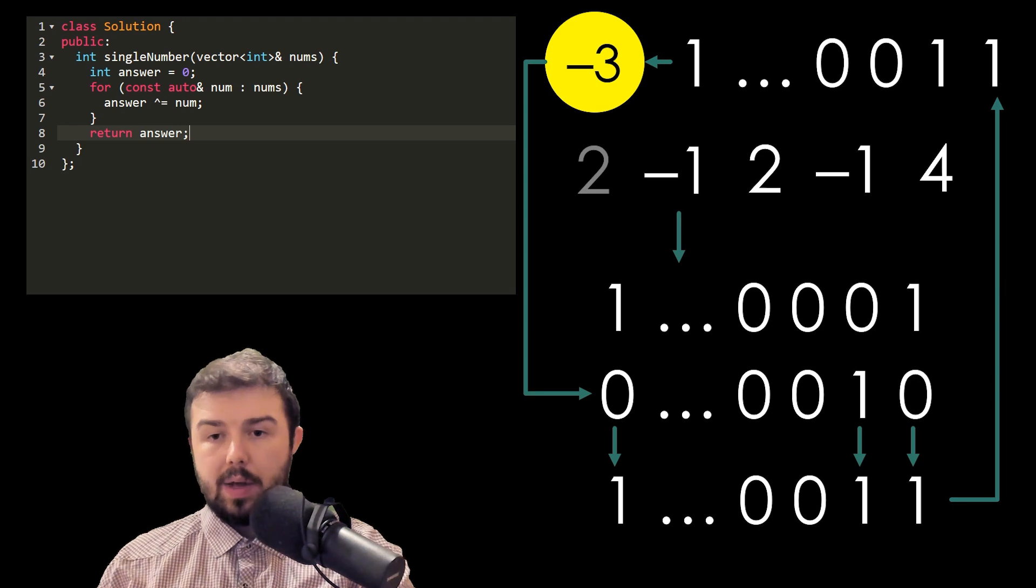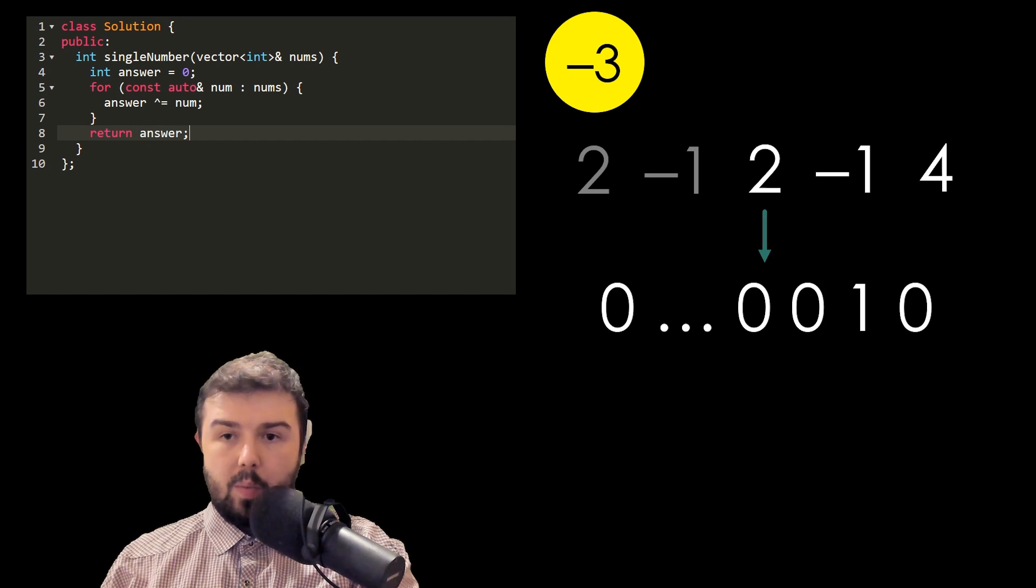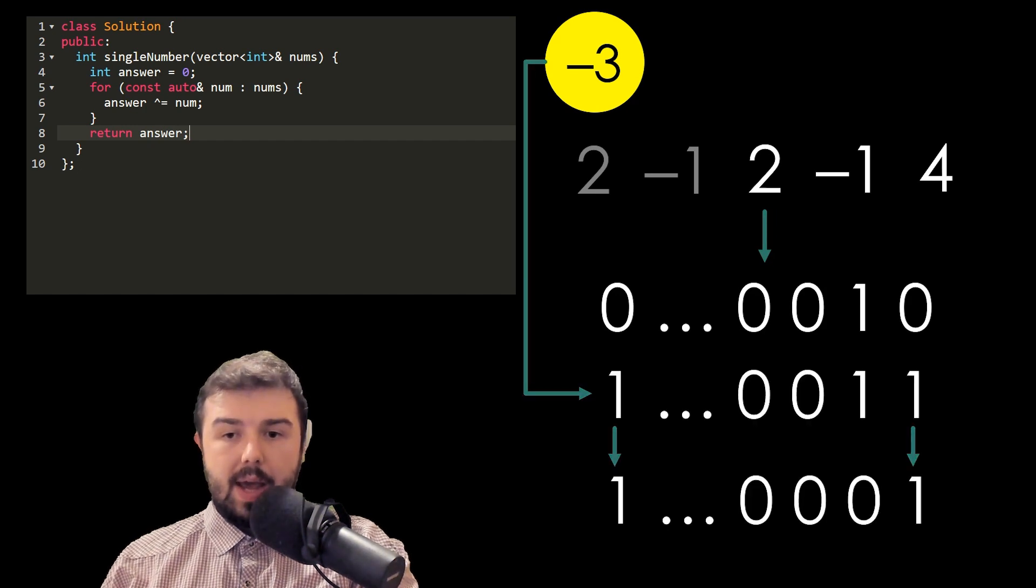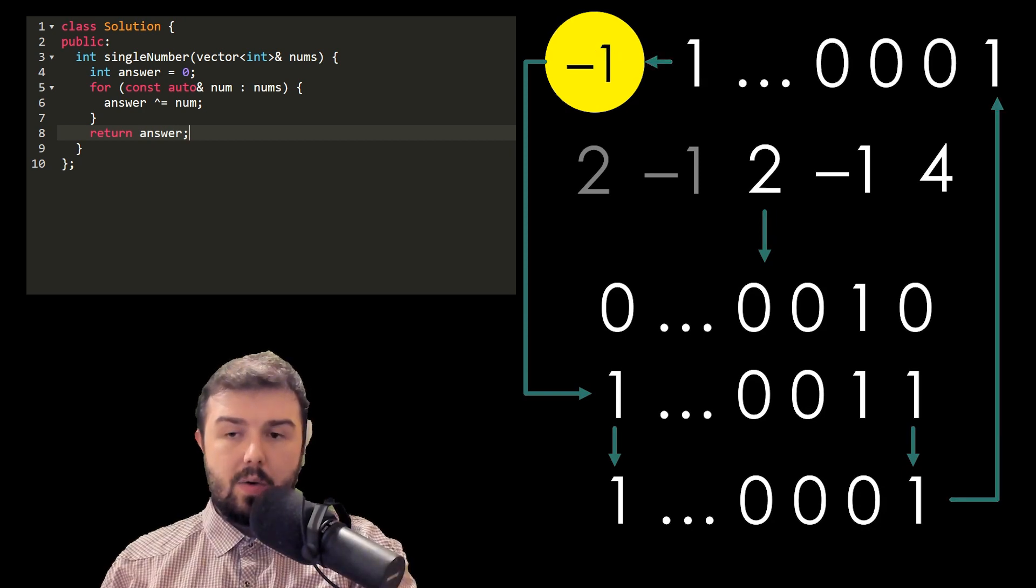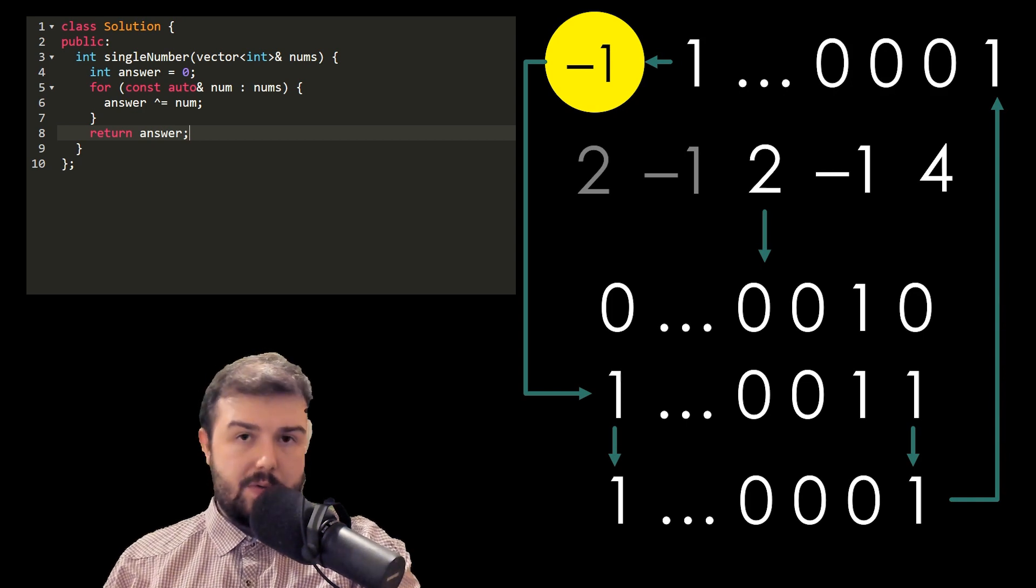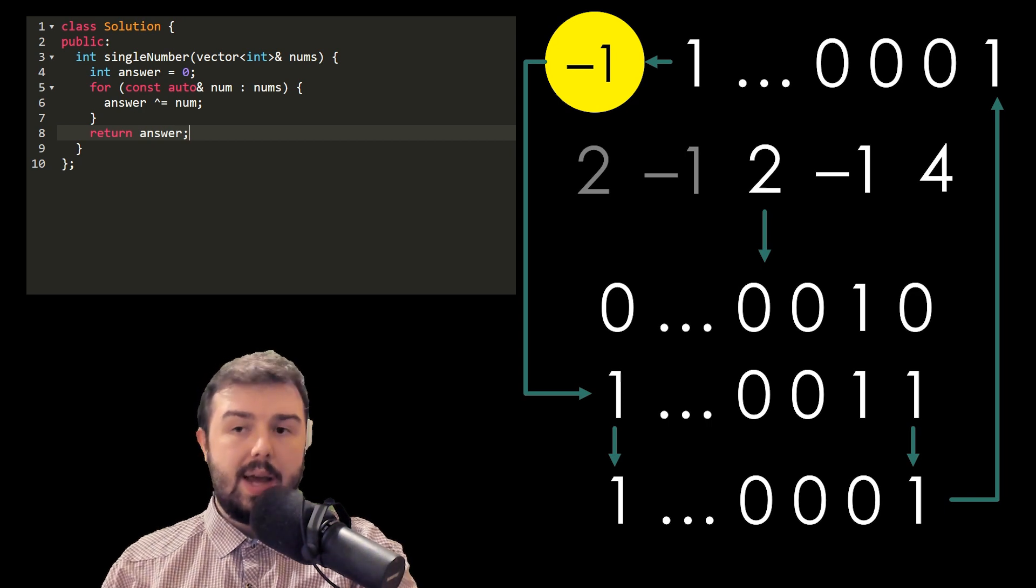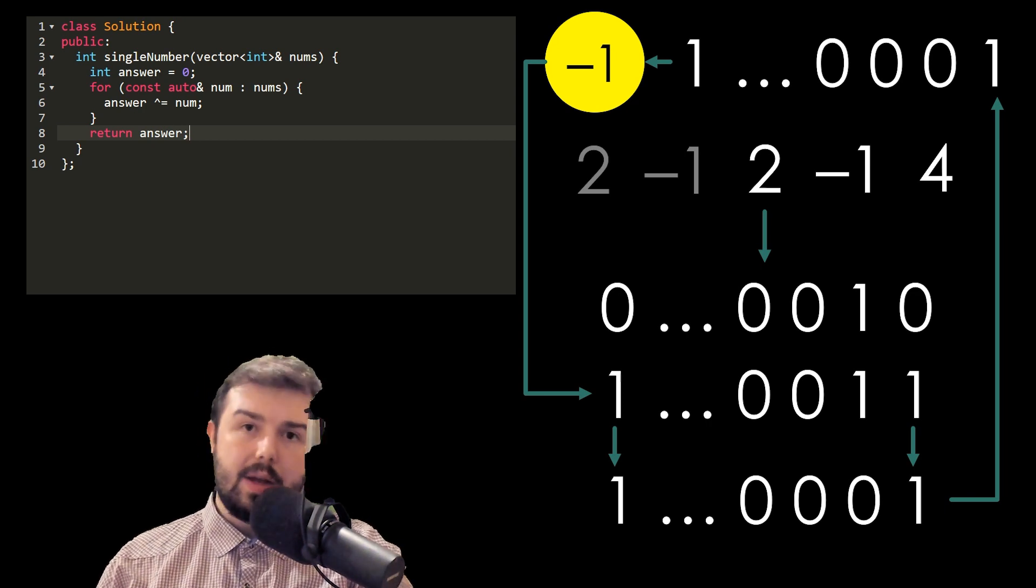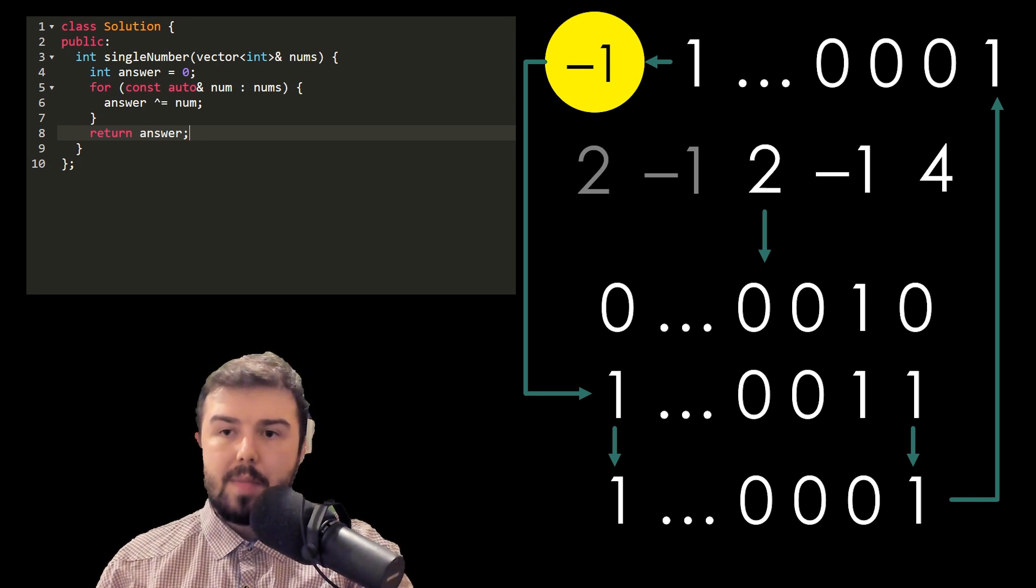Then we have number 2 and we perform XOR with number 2. What is interesting is that now we just remove both of our 2s. You can see that our answer is -1, and if this were the end of our array, we already found the answer of -1.